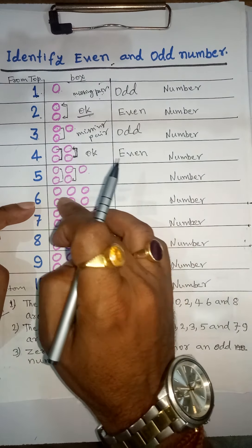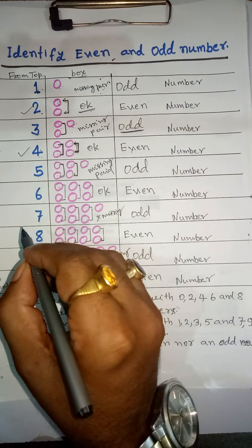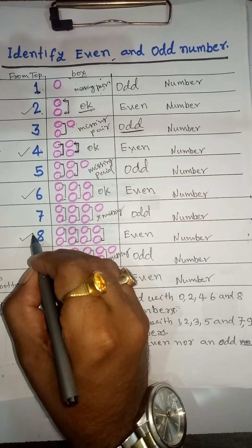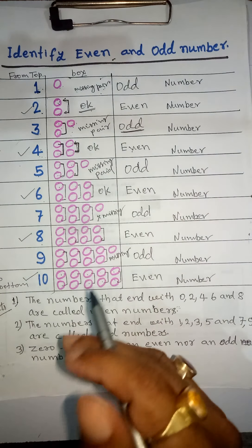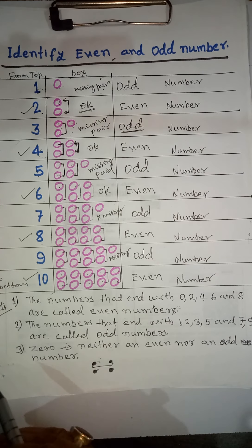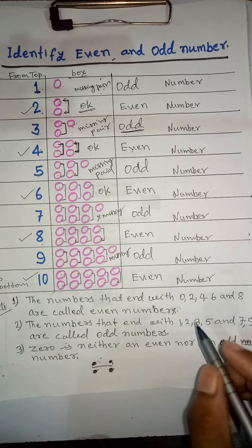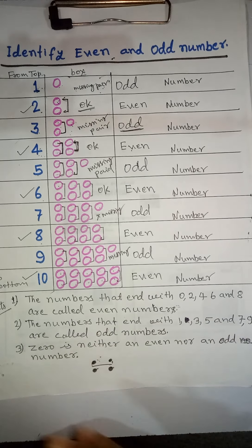Now you should always remember three facts. First fact: 0, 2, 4, 6, and 8 are called even numbers. Any number that ends with 0, 2, 4, 6, or 8 will always be an even number. So 2, 4, 6, 8 are even numbers, and 0 also makes a number even when it is the last digit.